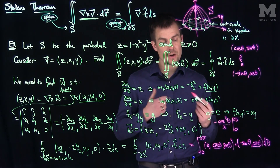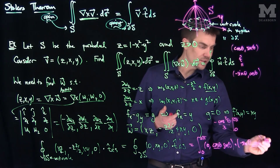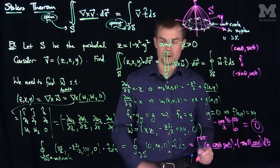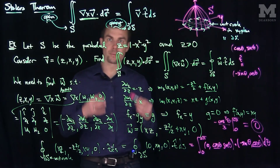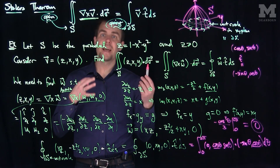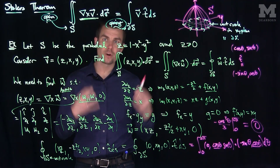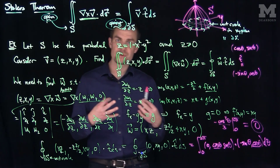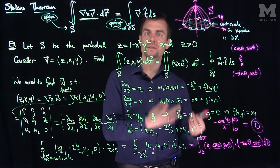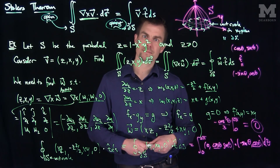So the flow integral equals zero. By using Stokes' Theorem, we spared ourselves the parametrization of the paraboloid and avoided computing dot products, cross products, normal vectors, equations of planes, and changing to polar coordinates — all by turning it into this simple flow integral. Thank you very much.